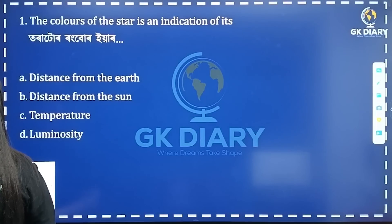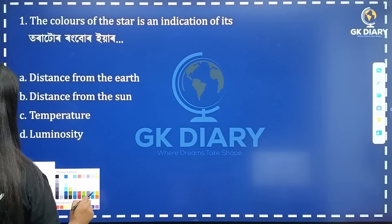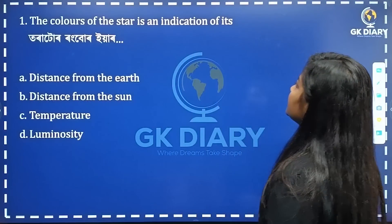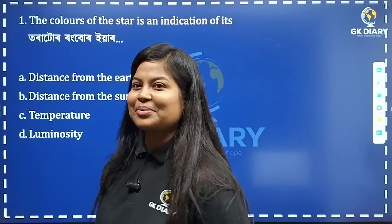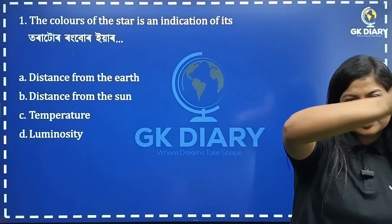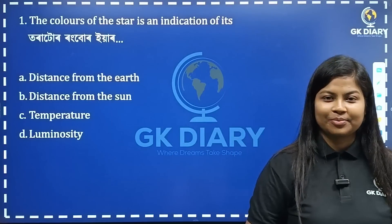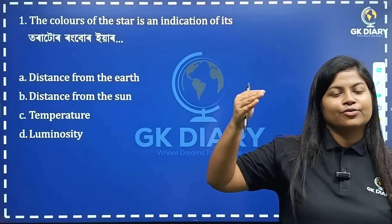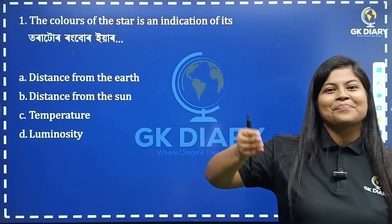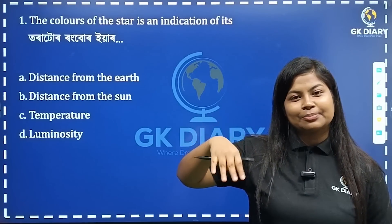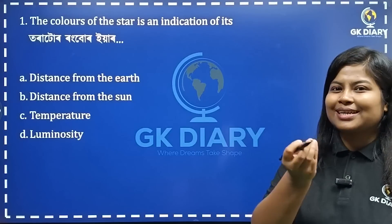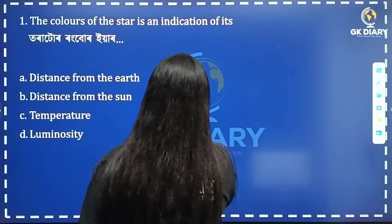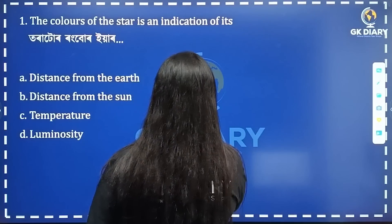First question: the color of a star is an indication of it. The solar system is a huge part of the universe. The universe, the solar system, the planets, the Earth. The color scale ranges: starting from a dark color, it is a red color.